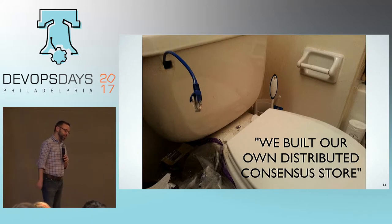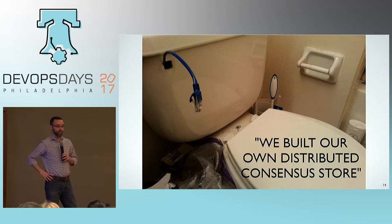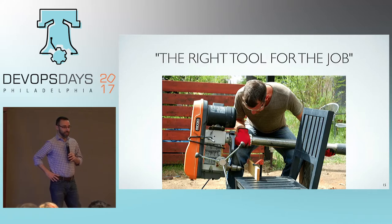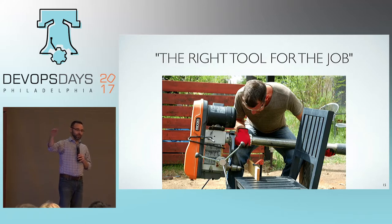In both construction and software, we have to make build versus buy decisions. But in construction, we would never say we decided to build our own distributed consensus store. In software, we always use the right tool for the job — no one in this room would ever split a perfectly working monolith into OpenShift on Kubernetes, on Docker, on AWS.